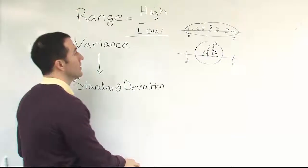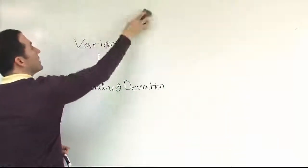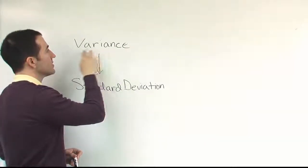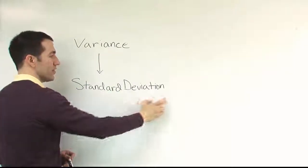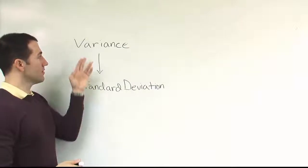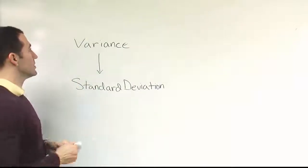So the two measures that I have listed on the board here are related. That's why I've drawn an arrow connecting them. So variance is sort of the first calculation you do. And from variance, you end up with a standard deviation. We're going to have videos that show how to calculate these quantities, and we're also going to have videos that show how to interpret them. But for now, let me just point out a little simple relationship.